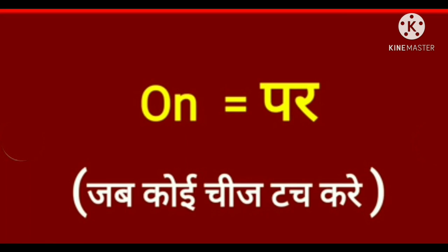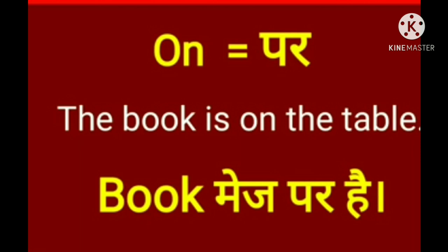The first preposition is 'on'. On ka matlab hota hai 'per' (means 'on/upon'). As we all know, in English one word can have 7 to 8 meanings, but today we will learn the generally used meaning. On is used when one object touches another object. Example: The book is on the table. Book mej par hai — the book is touching the table, so we use 'on'.